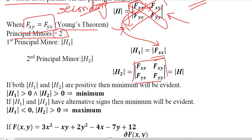This is only the first column and first row, but this is including the first second row and second column. So this is |H_1|, the first principal minor, and this is |H_2|, the second principal minor.